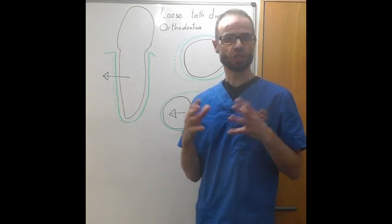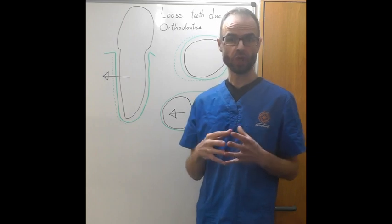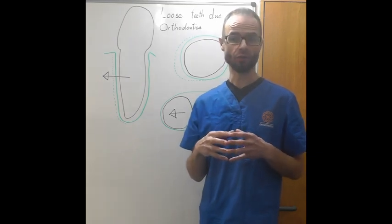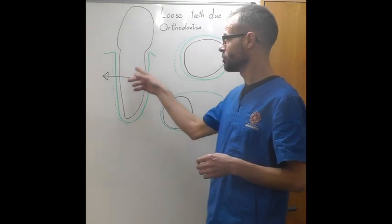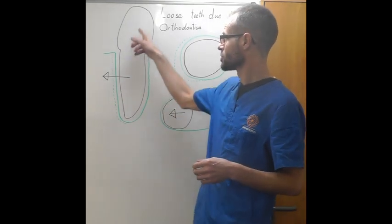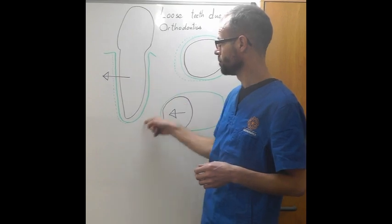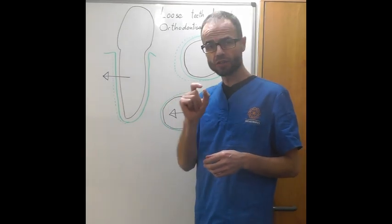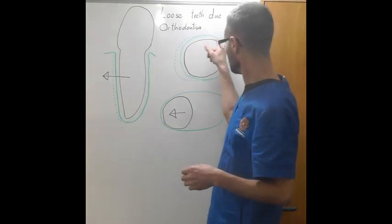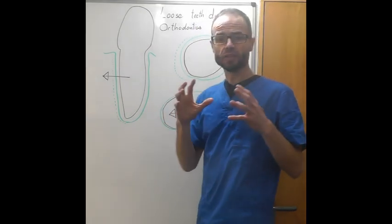Usually I reassure them that this is a normal situation that goes on when you orthodontically move a tooth. What happens is that a tooth sits in a socket. So this is the tooth and this is the bone around the tooth. It sits with a small gap all the way around. And this is a joint.